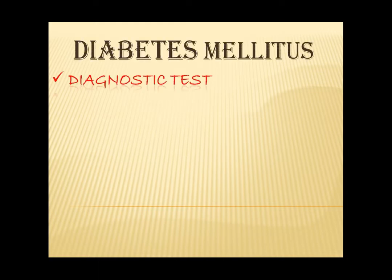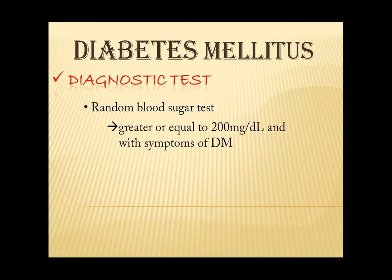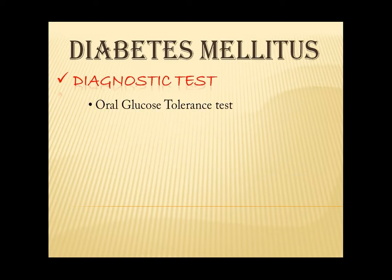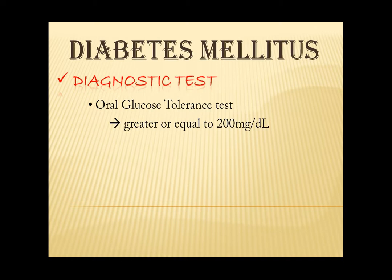Let's now proceed to diagnostic tests. First, we have random blood sugar test — there is no special preparation needed. The result will show greater or equal to 200 mg/dL with symptoms of diabetes mellitus. Next is fasting blood sugar test — the patient needs to be under NPO for 8 hours. The result will show greater or equal to 126 mg/dL. Oral glucose tolerance test measures how the cells in your body absorb the glucose after consuming a specific amount of sugar. The result will show greater or equal to 200 mg/dL.